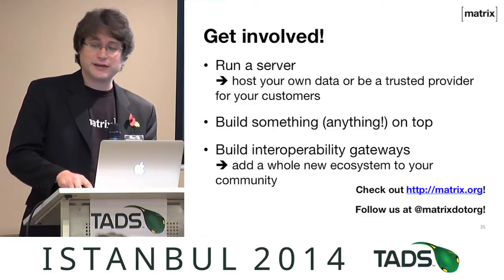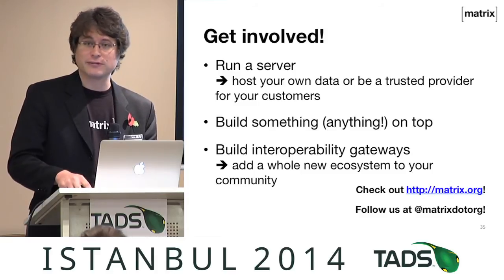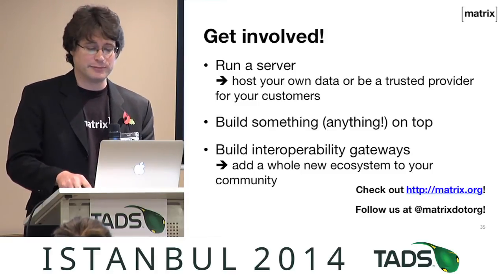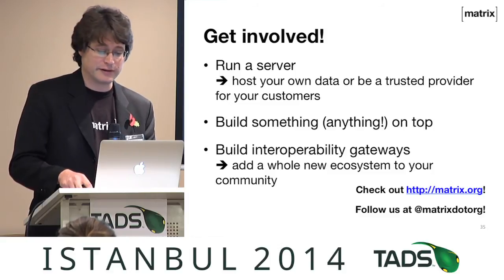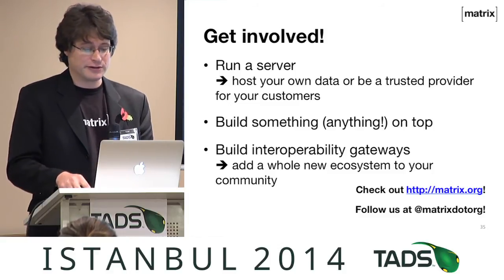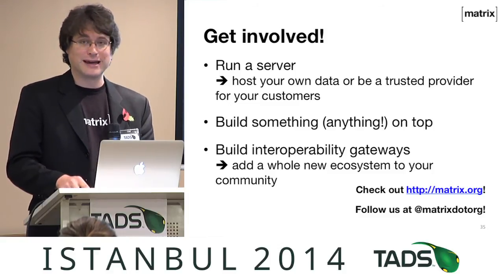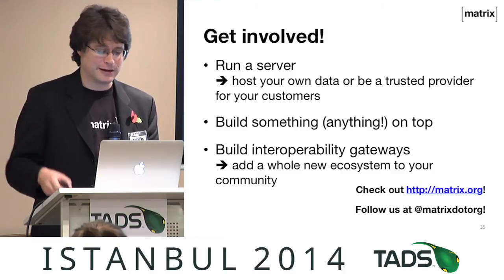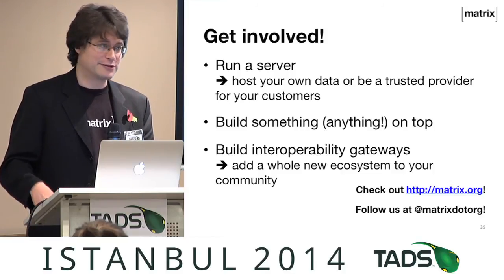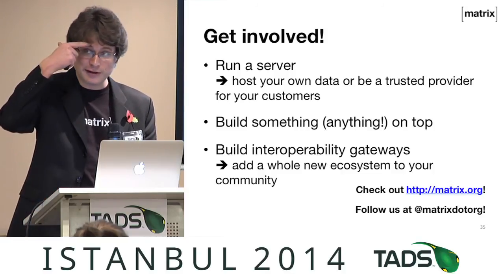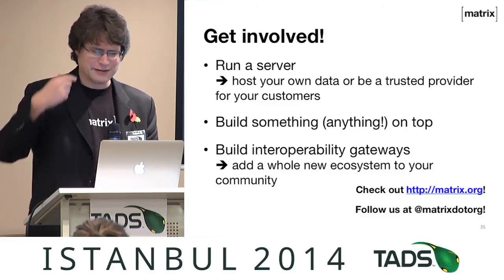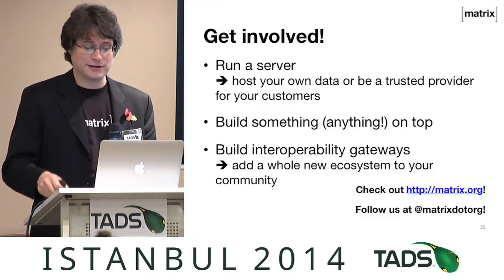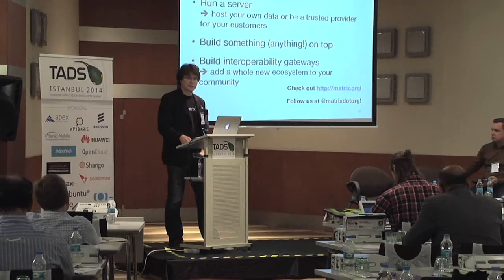You can get involved. Please run a server — go and grab it from Matrix.org, it's all on GitHub. If you can run Python, run a server. Build something on top, build gateways — XMPP gateways, SIP gateways, whatever gateway you like. Help us create this brave new world that looks a bit like a PSTN but lives on the internet, real soon now.